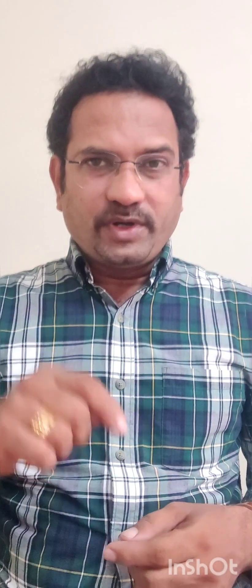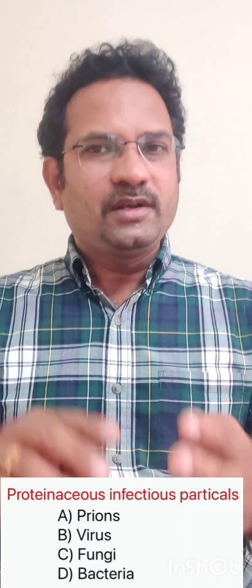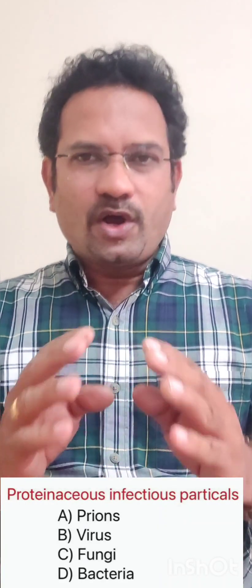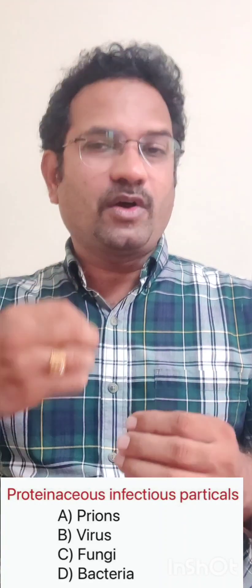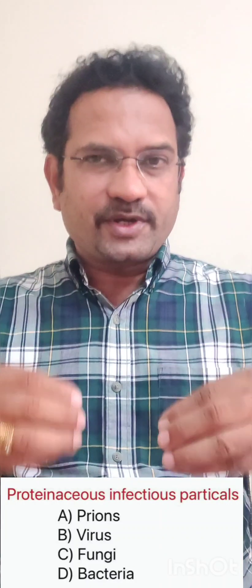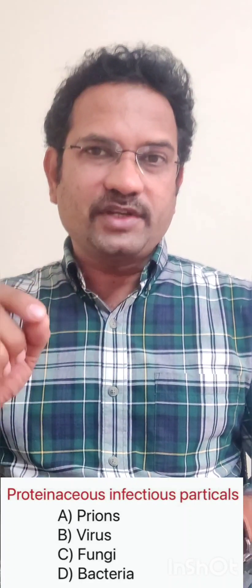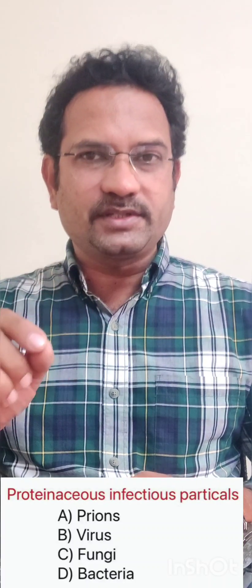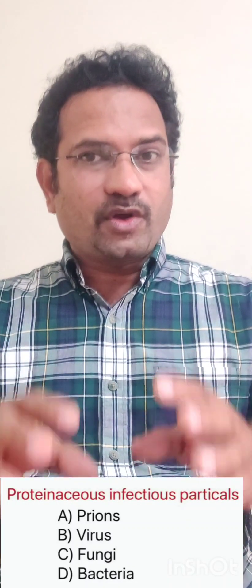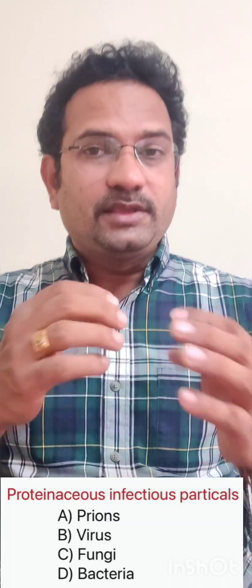Now the last question: Proteinaceous infectious particles are known as — options are prions, virus, fungi, and bacteria. Proteinaceous infectious particles are known as prions. We usually think infection is caused by organisms, but certain proteins can get into the body and cause infections, usually from contaminated meat. If people eat that meat, they may get prions which cause encephalopathy. Creutzfeldt-Jakob disease is an example — prions cause CJD in humans, and in cows they cause mad cow disease, also called bovine encephalopathy. These infections are caused only by proteins, not organisms.